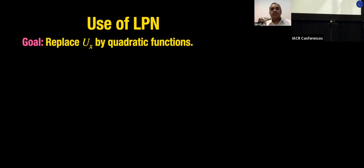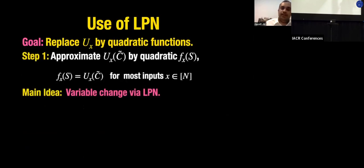How do we do it? This is where we use our key assumption: Learning Parity with Noise (LPN). The goal is to replace the computation U_x(C̃) with quadratic functions. We do it in two steps: in the first step, we solve the problem approximately.